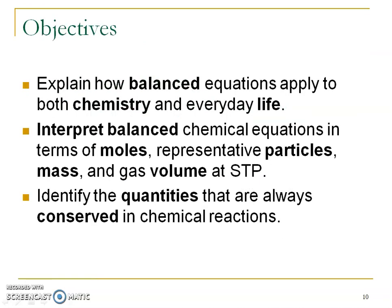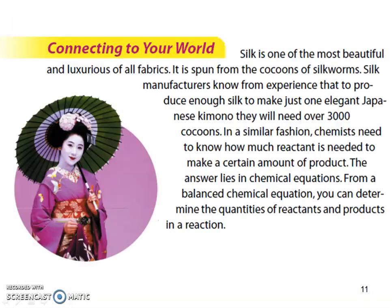In this section, you're going to explain how balanced equations apply to both chemistry and life. We're going to interpret balanced equations according to quantities of moles, particles, mass, and volume, and you're going to identify those quantities as being conserved. Silk is one of the most beautiful and luxurious of all fabrics — it is spun from cocoons of silkworms. Silk manufacturers know from experience that to produce enough silk to make just one elegant Japanese kimono, they will need over 3,000 cocoons. Similarly, chemists need to know how much reactant is needed to make a certain amount of product. The answer lies in chemical equations.